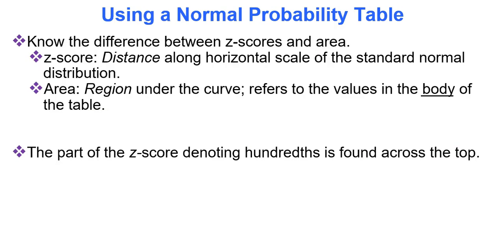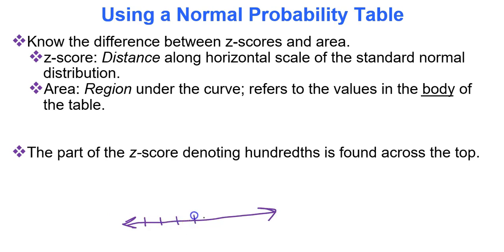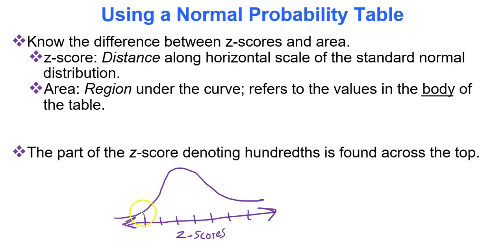Know the difference between z-scores and area. A z-score is the distance along the horizontal scale, or the x-axis, of the standard normal distribution. So below your bell curve you'll have an x-axis, and your z-scores will be labeled below. When we're talking about area, we're talking about actual space underneath the curve — the space or area of the region under the curve.